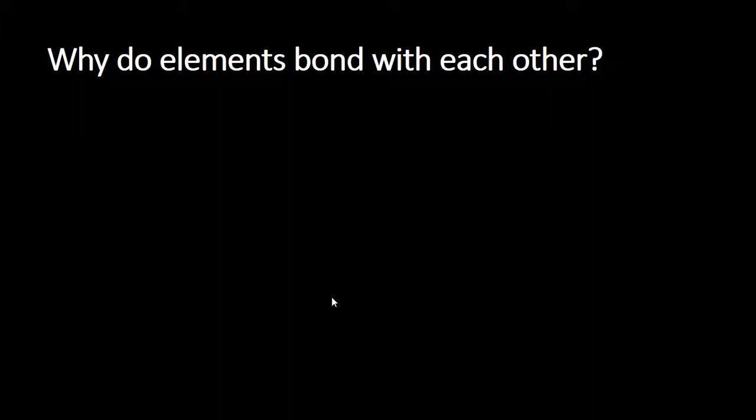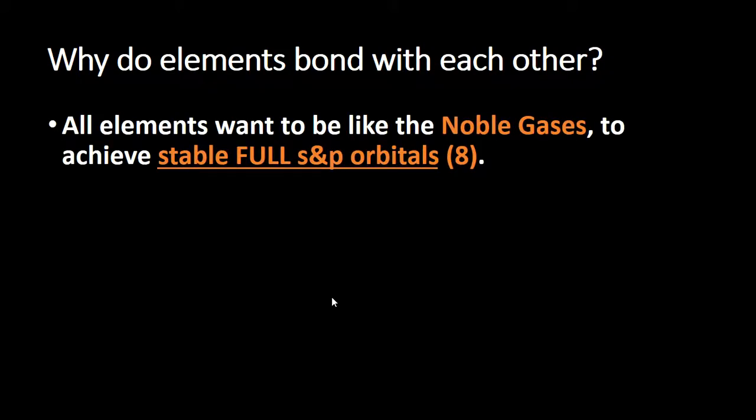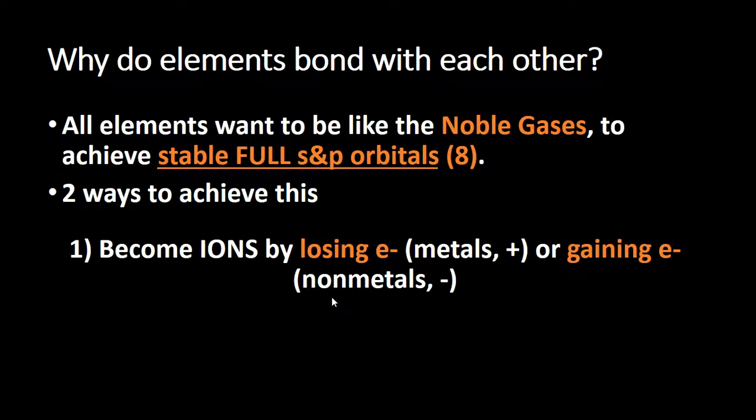At this point of the course, you've come to realize that you can always say because it's stable, because that's often the reason why things happen. The other thing you can say is that everything wants to be like a noble gas and that things are bonding to be like a noble gas, which are stable electron configurations where their S and P orbitals are all full, and that's a total of eight electrons. And they achieve this by either the ionic way, they become ions and they either lose electrons like metals, which makes metals positive, or they gain electrons like non-metals and they become negative. Or they will start sharing electrons.